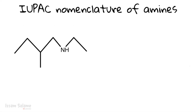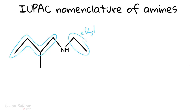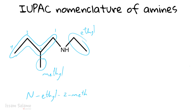IUPAC nomenclature can also be used to name secondary and tertiary amines. For this secondary amine example, we look for the longest chain and number the carbons from the end closer to the nitrogen: carbon one, two, three, and four. We have two substituents — an ethyl group and a methyl group. The ethyl group is joined to the nitrogen, so the name is N-ethyl-2-methyl-1-butanamine.